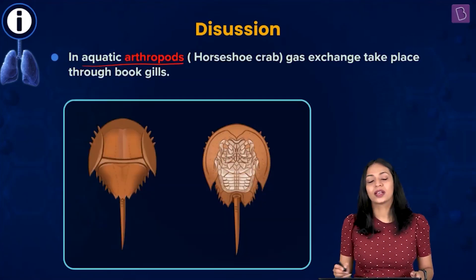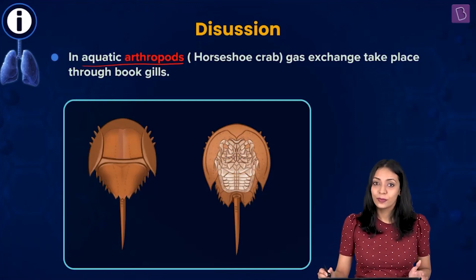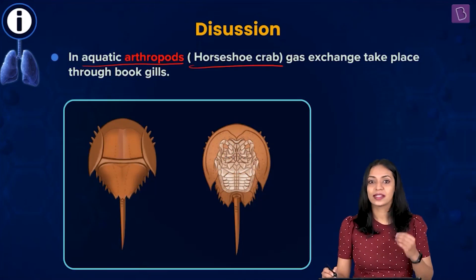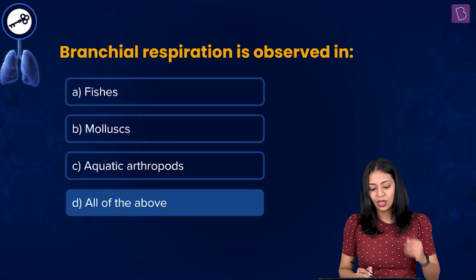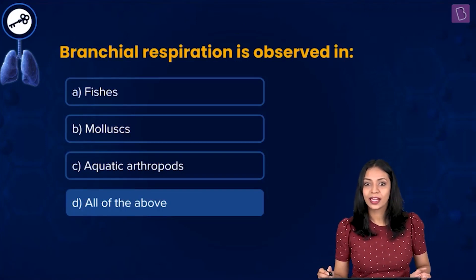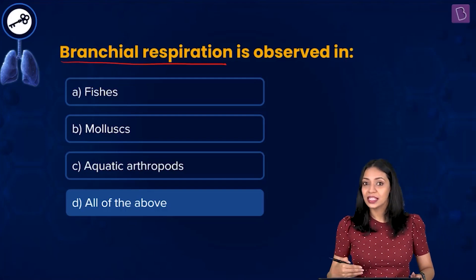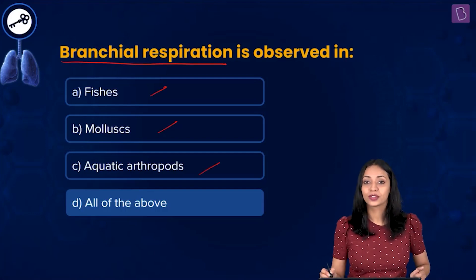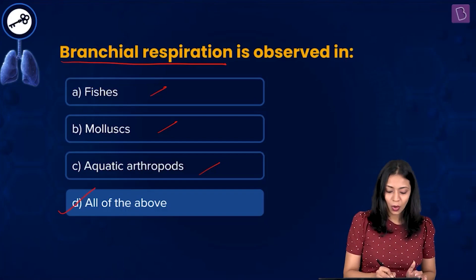Aquatic arthropods — Arthropoda is a phylum under the animal kingdom. An example of an aquatic arthropod is the horseshoe crab, in which exchange of gases and respiration takes place through book gills. Since fishes, mollusks, and aquatic arthropods all respire through gills, the correct answer to this question is option D, all of the above.